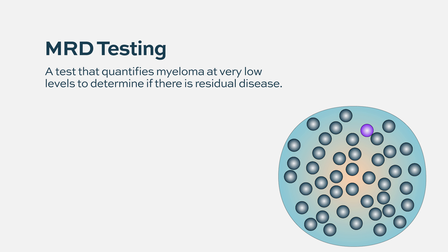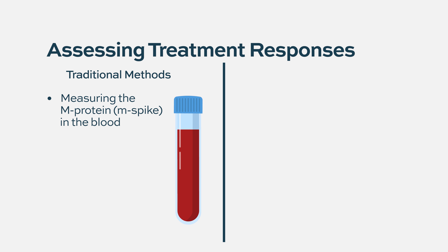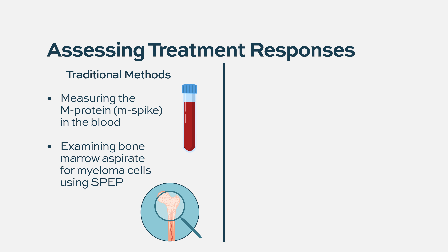Traditionally, we assess and identify myeloma through therapy by looking at a protein in the blood, or by looking at the bone marrow under the microscope. But you need really billions if not trillions of cells to produce an amount of protein that is detectable in a blood test, a urine test, or visible under the microscope.